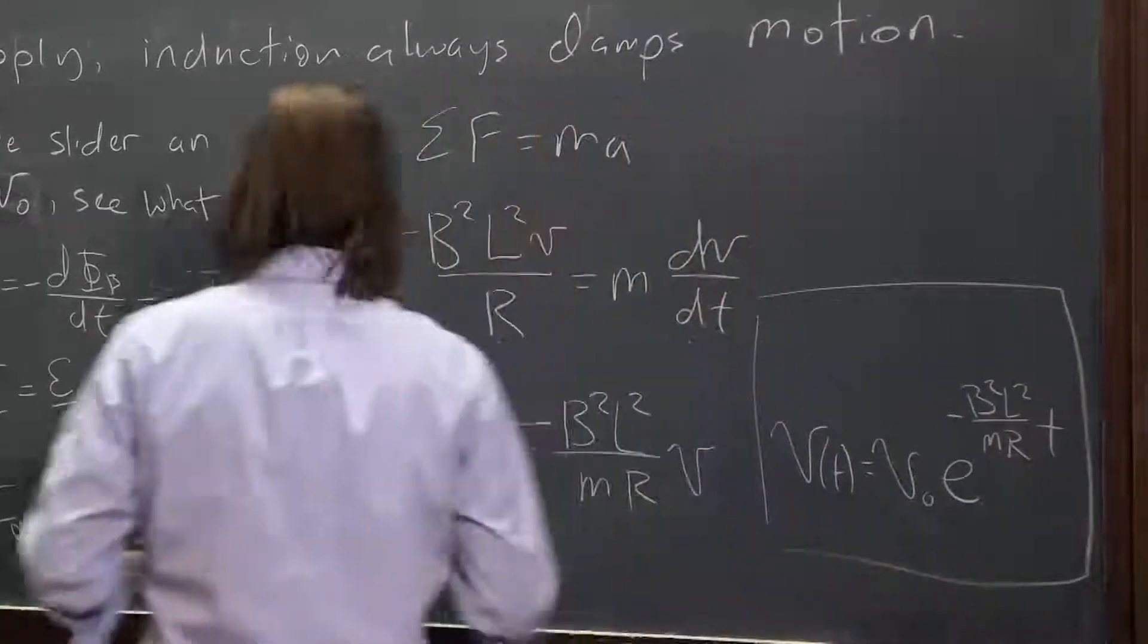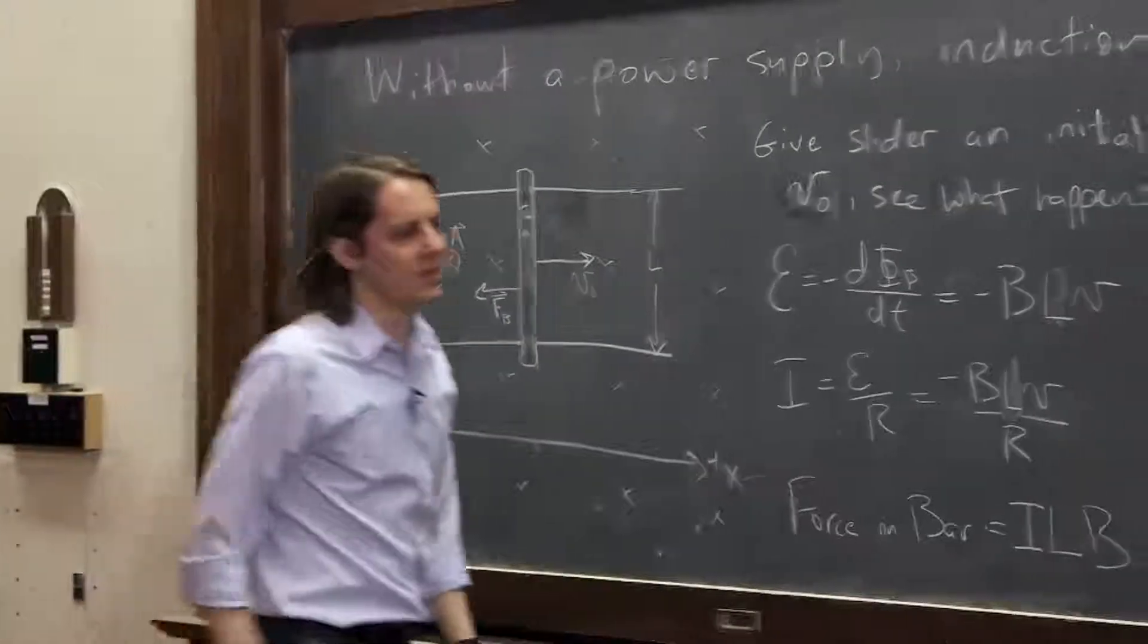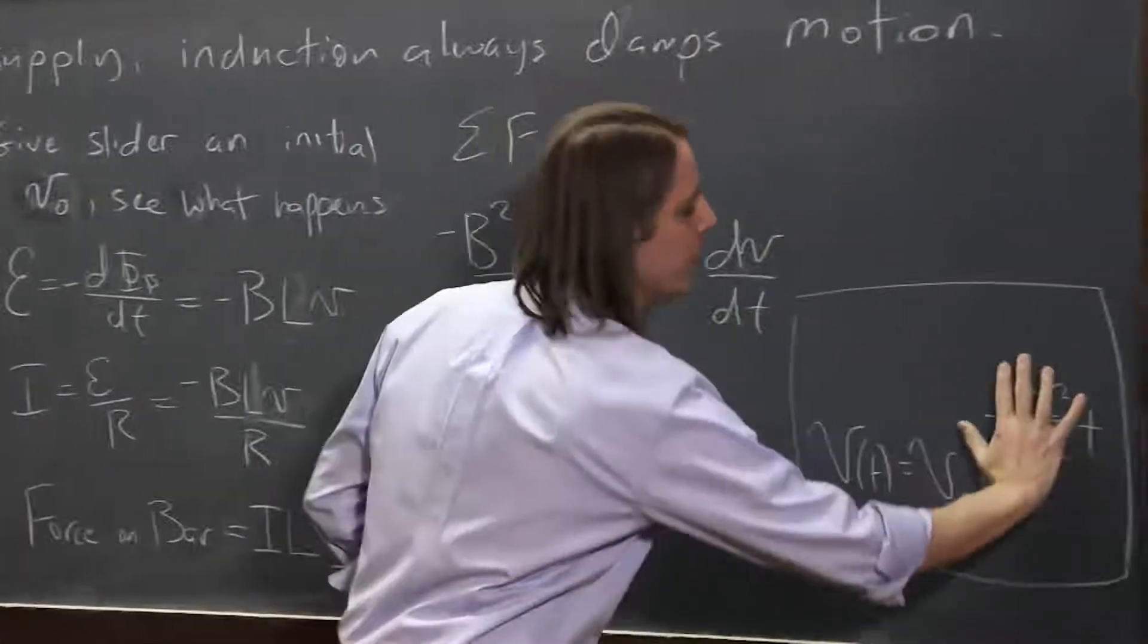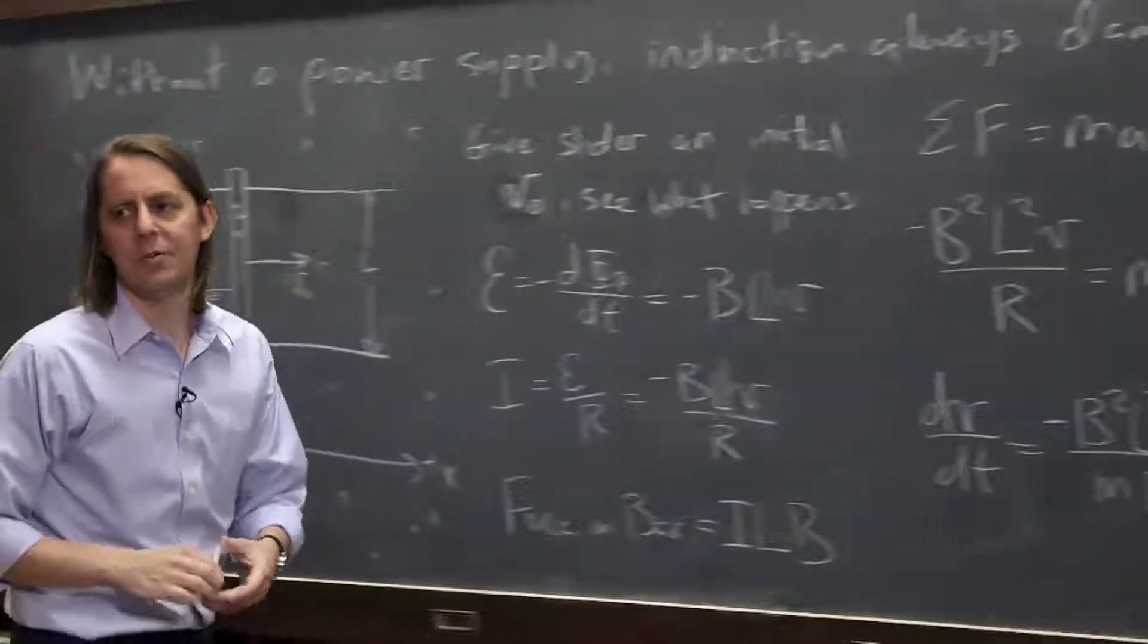So what this means is, if we give this thing an initial kick, it'll slow down to zero. At time equals zero, e to the zero is one. It'll go at v naught, but then it'll exponentially decay, and that initial velocity will be lost.